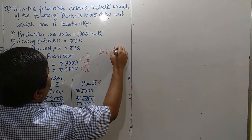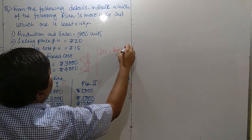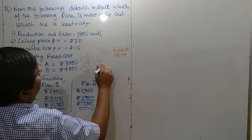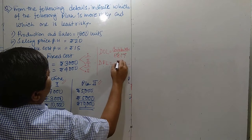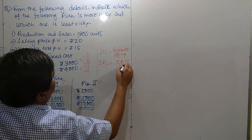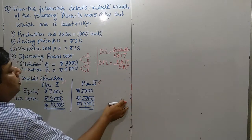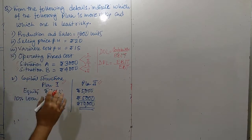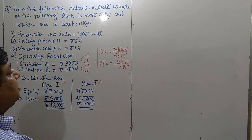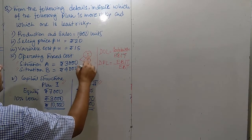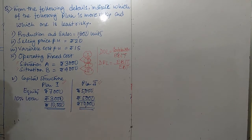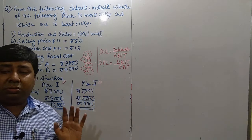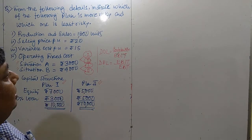The formula of DOL is contribution divided by EBIT. Then another one is DFL — financial leverage — and the formula is EBIT divided by EBT. All such components first we have to derive from the income statement. Since four separate combinations arise, we have to maintain four columns in the income statement.